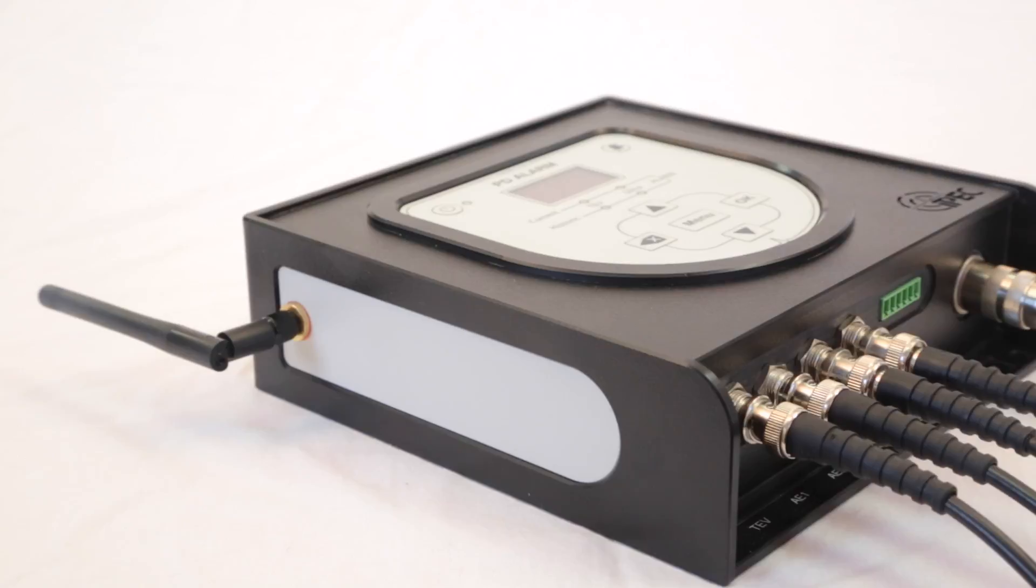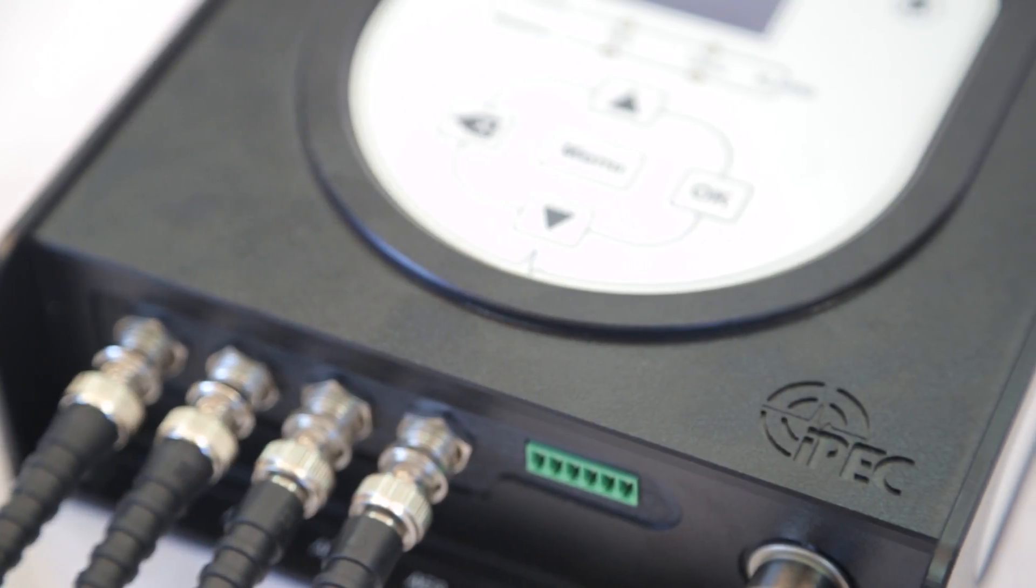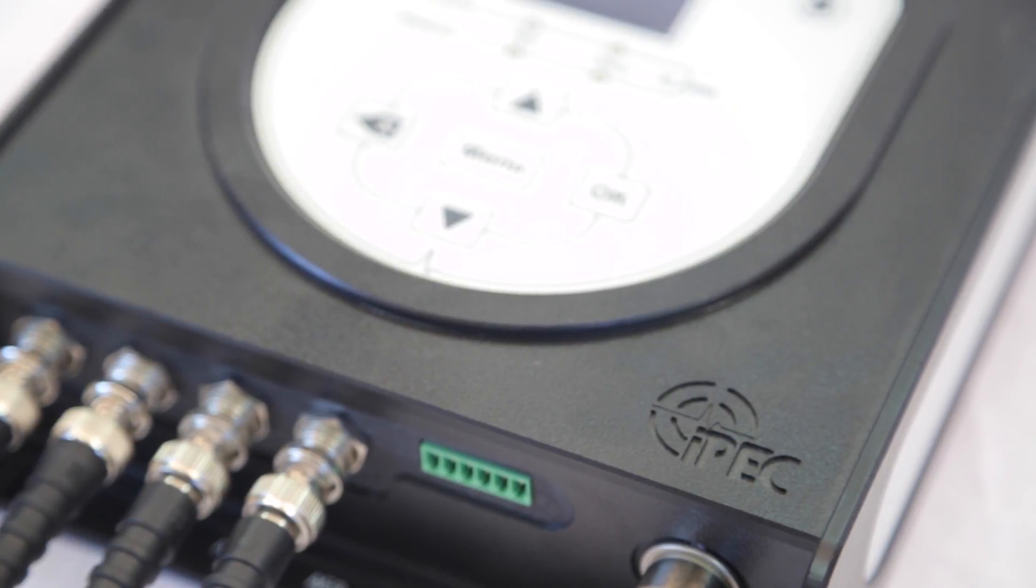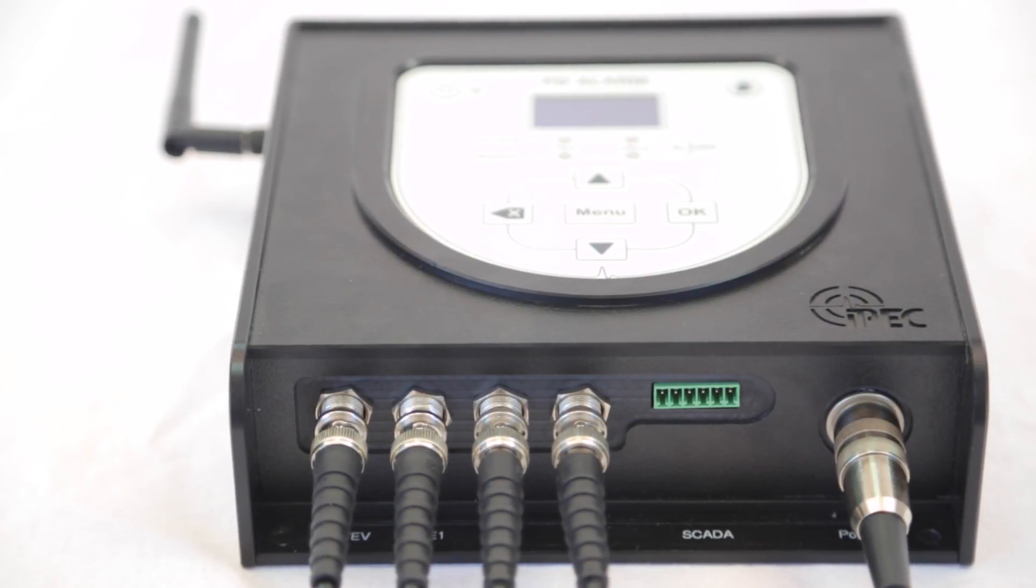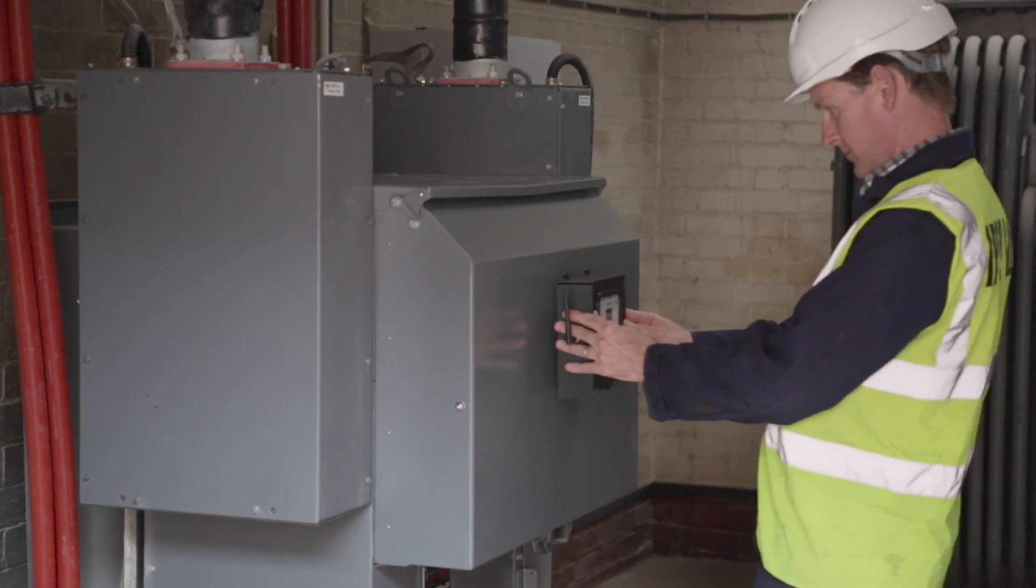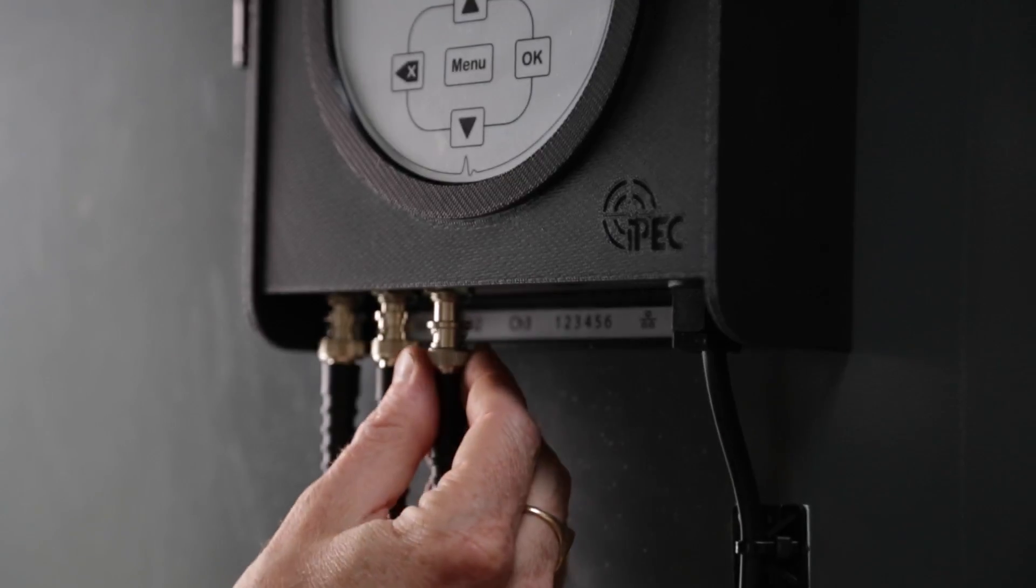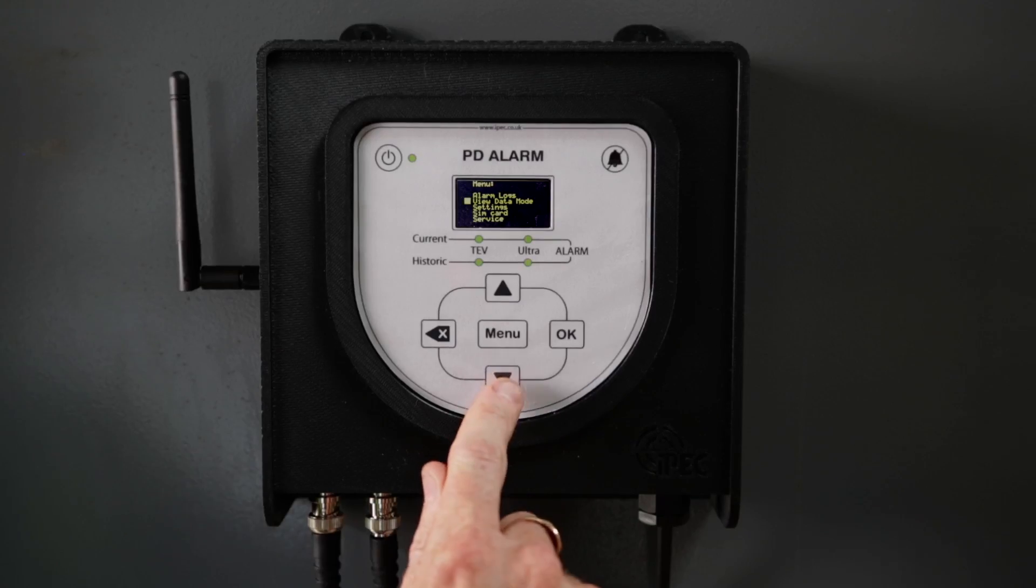The PD alarm is a brand new partial discharge monitor from IPEG. This small asset mounted instrument is used to indicate the presence of partial discharge in high voltage switchgear, ring main units, and transformers magnetically coupled to the switchgear. The PD alarm can be installed and set up in less than an hour without any high voltage outage required.